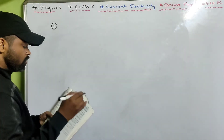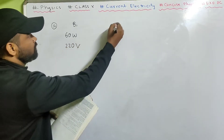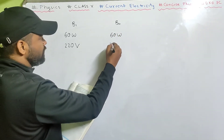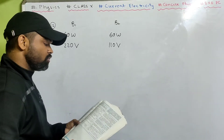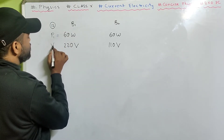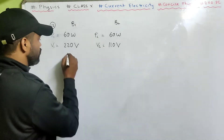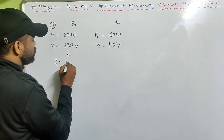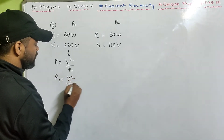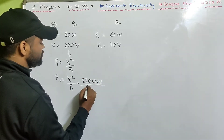Problem 12: Two bulbs — bulb 1 rated 60 watt, 220 volt; and bulb 2 rated 60 watt, 110 volt. Calculate the ratio of their resistances. Using power equals V squared by R: R1 is V1 squared by P1, which is 220 into 220 by 60.